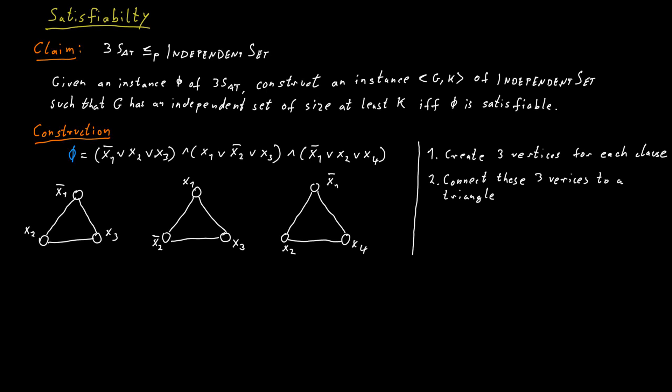So how can we enforce these consistent choices when we pick our vertices for our independent set? Well, we just connect x2 and not x2 by an edge. So whenever we find a vertex that corresponds to a variable and another vertex that corresponds to the negation of that variable, we connect the two by an edge. This ensures that our choices are somewhat consistent. So when we select vertices for our independent set, we make choices that are consistent with assigning truth values to the variables.